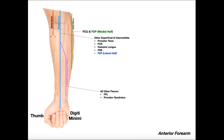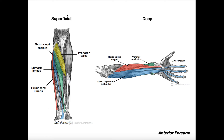For the flexor muscles in the anterior compartment, we have a bunch of layers. The superficial layer has four muscles: pronator teres (most lateral), flexor carpi radialis, palmaris longus, and flexor carpi ulnaris. Deep to those is the intermediate layer, which contains flexor digitorum superficialis (FDS). Layer three has two muscles: flexor pollicis longus (FPL) and flexor digitorum profundus (FDP). And underneath those is layer four — just one muscle — pronator quadratus, shown here in green.